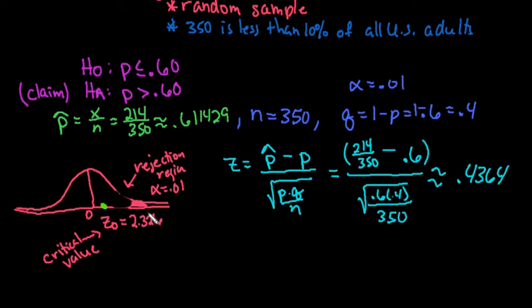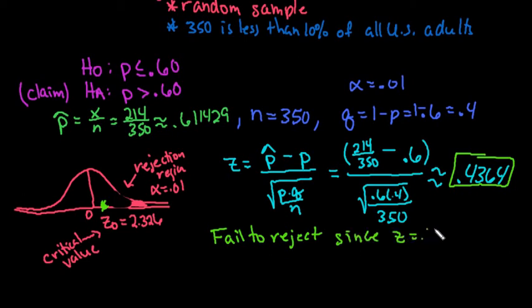The way that you use the rejection region is if your value that you just calculated falls in this rejection region, the shaded region, then you reject. If it doesn't, like ours does not, we would fail to reject since our z of 0.4364 is not in the rejection region.